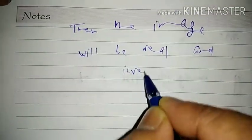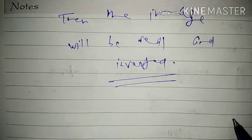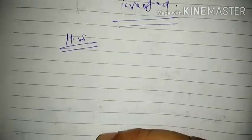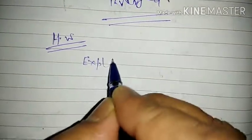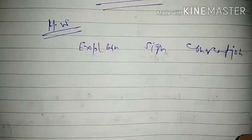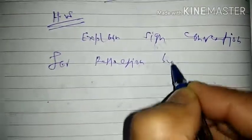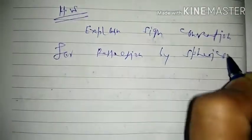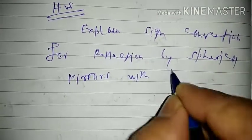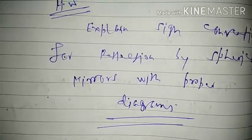Today's homework is: explain sign convention for reflection by spherical mirrors with a proper diagram. Thank you very much.